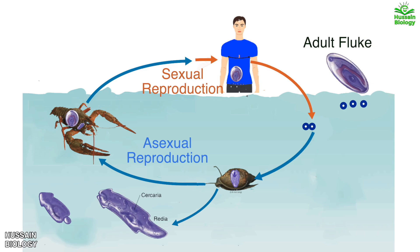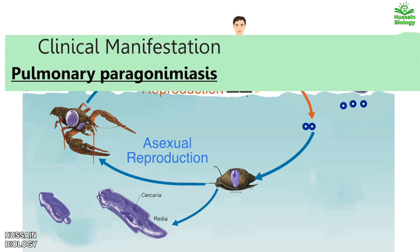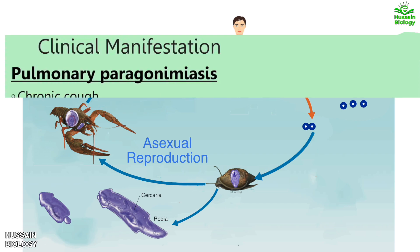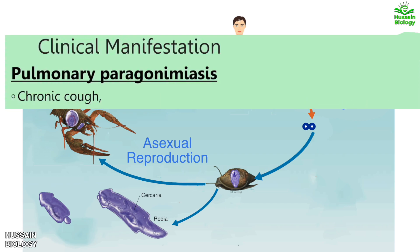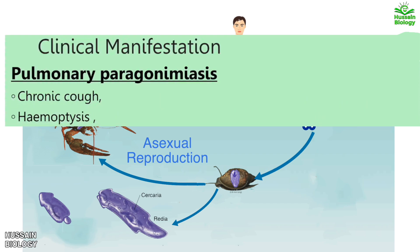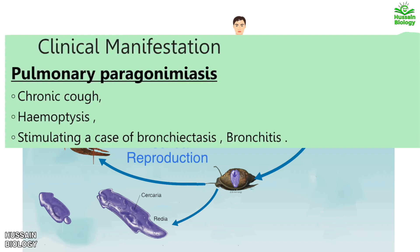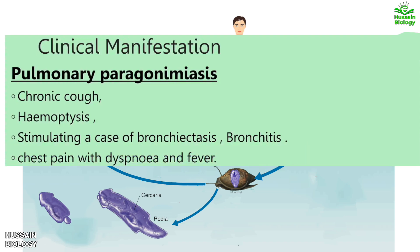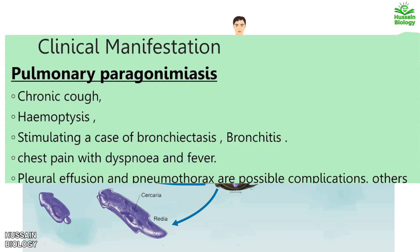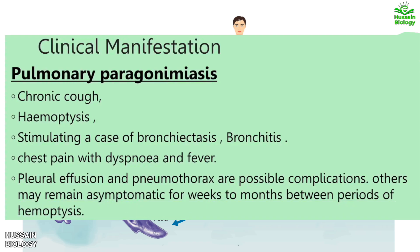Now looking at the clinical manifestations of pulmonary paragonomiasis: we see chronic cough, hemoptysis, bronchiasis, chest pain with dyspnea, and fever. We also see pleural effusion and many more manifestations.